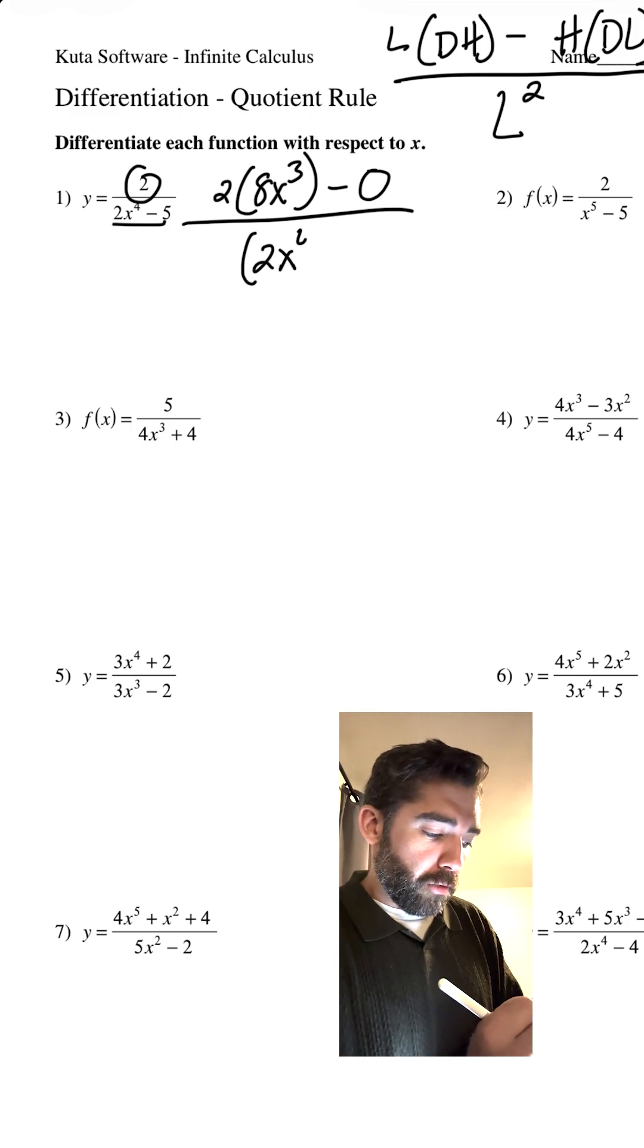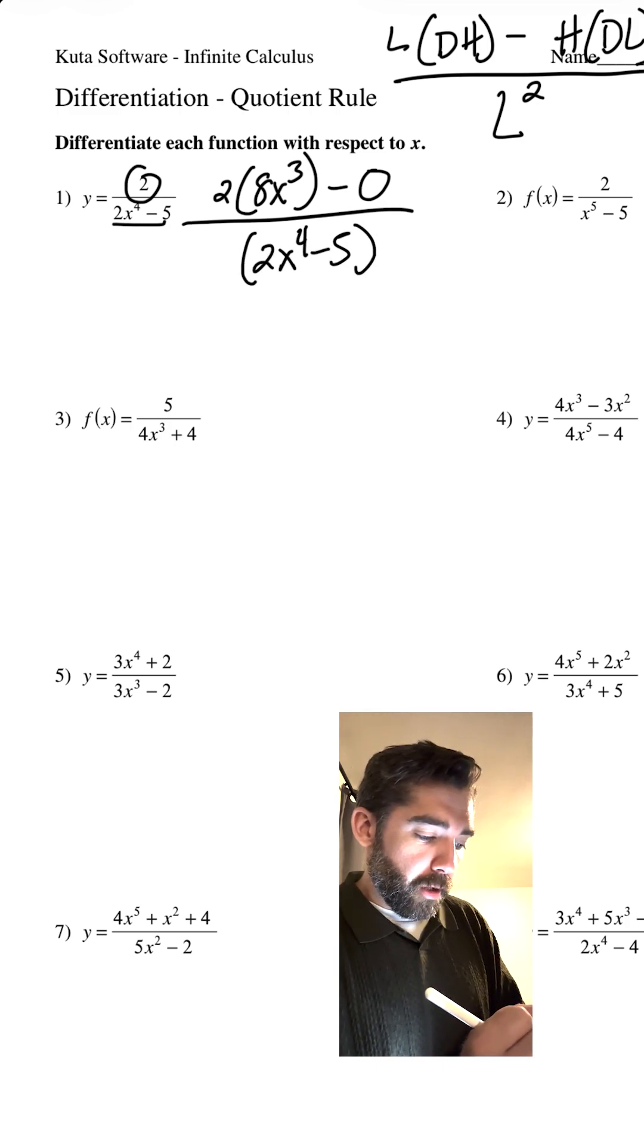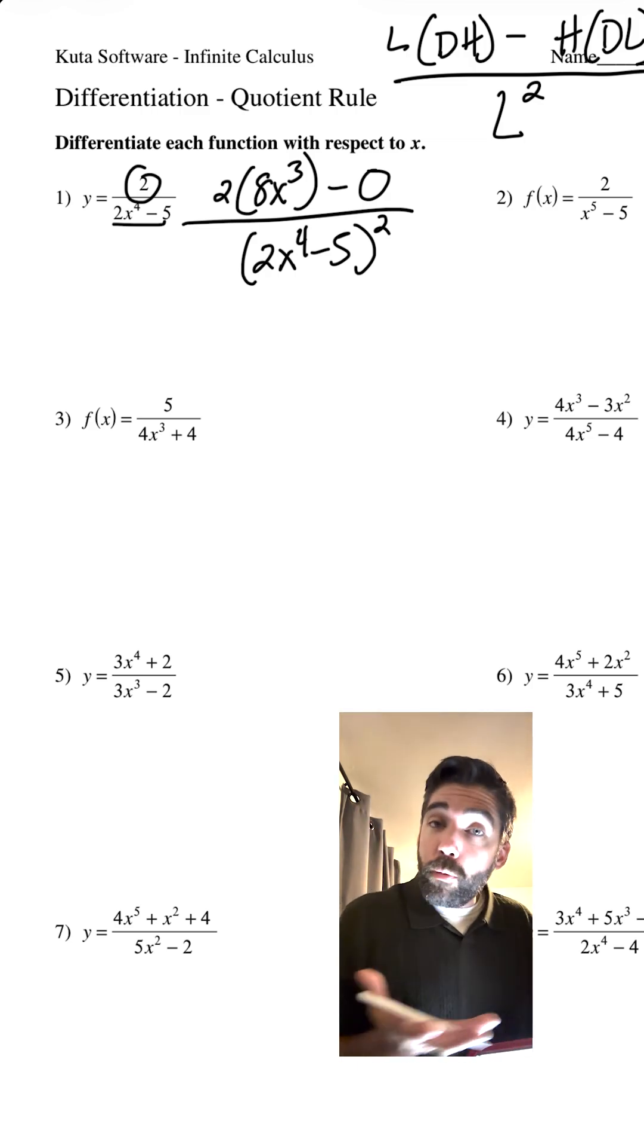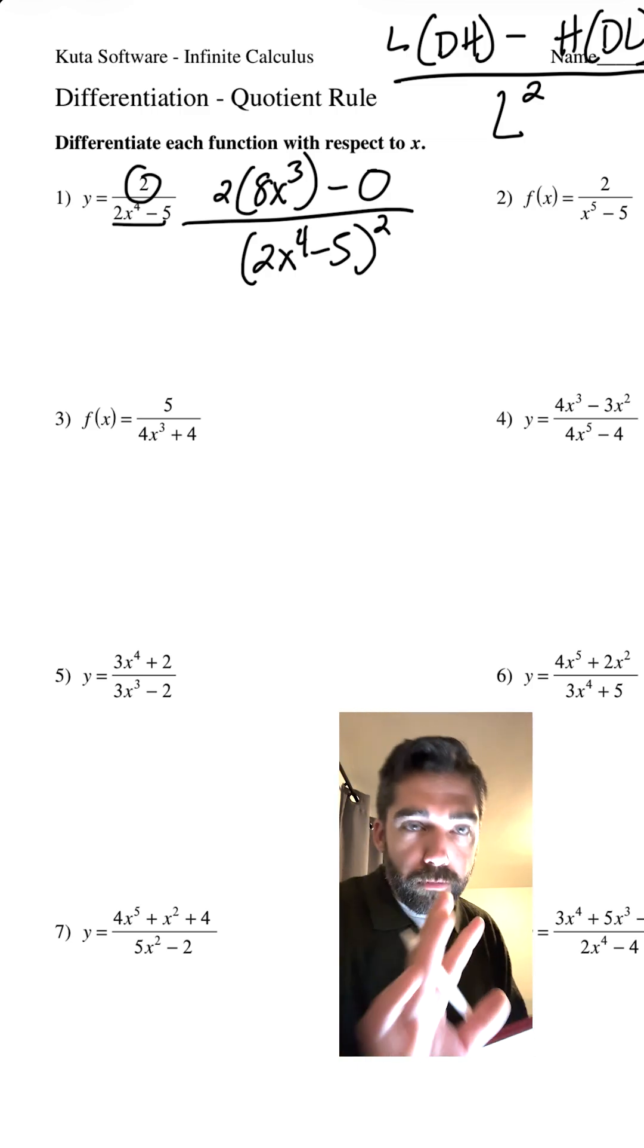All over low low, 2x to the fourth minus 5 quantity squared. We can leave it like that. We could be done. Or we can simplify. Okay, we can do it.